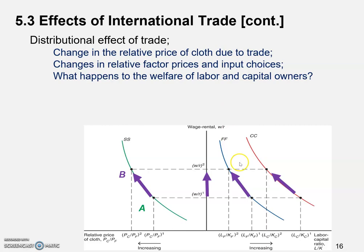Similarly, we cannot look at the real rental price R over P, because both R and P are changing. But the good news is, in the long run, W over P equals the marginal product of labor, and R over P equals the marginal product of capital. So MPL and MPK give us a pretty easy way to figure out the welfare of these factors.